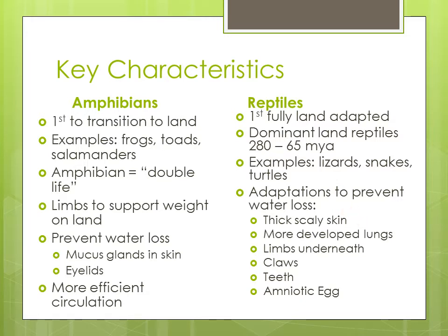Reptiles have many adaptations to prevent water loss since they live on land, including thick, scaly skin. Their lungs are more developed because it takes more energy to breathe. Their limbs are underneath their body — instead of out to the side like amphibians — which allows them to move faster and get their bellies off the ground. They also have claws and teeth, which help with feeding and protecting against predators. The amniotic egg, seen in reptiles and later in birds, is more developed than fish or amphibian eggs — it has a protective coating and a food source for the developing embryo, allowing babies to be more developed before hatching.